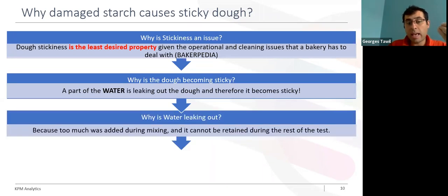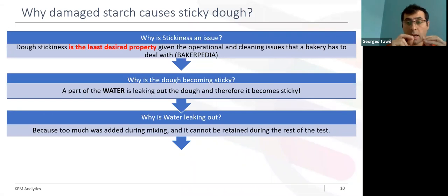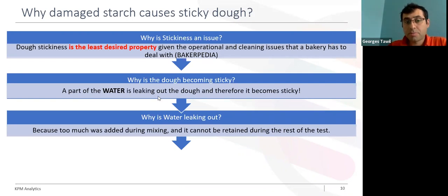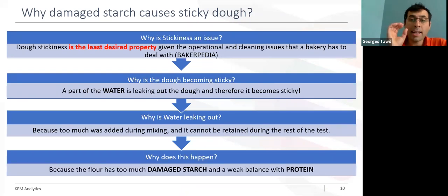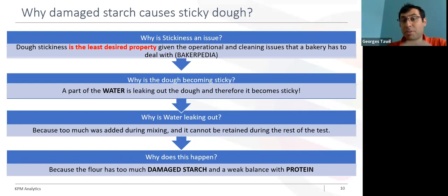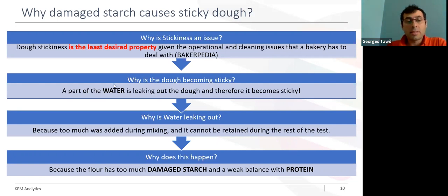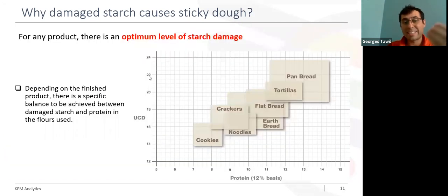This happens because too much water was added at the beginning of mixing, and this amount of water cannot be retained in the rest of the dough. The reason is very simple — the flour contains too much damaged starch, and there is a weak balance with the protein. This is why we know today that there is a balance between starch damage and protein content for every finished product.